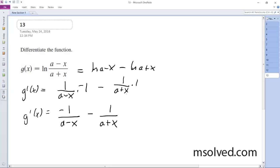And we can leave it like that if you really want to, you can get common denominators and you end up with a quantity, negative quantity (a plus x) minus quantity, let's see here, (a minus x) all over (a minus x) times (a plus x).